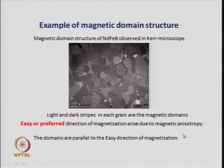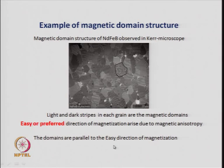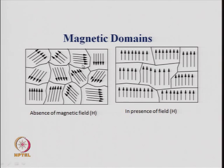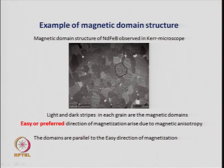Magnetic anisotropy tells you that there are directions in which magnetization can be easily aligned and directions in which the magnetic vectors will not be aligned easily. The domains are parallel to the easy direction of magnetization. Kerr microscopy is very important in understanding magnetic domain structure, confirming that what we draw schematically is actually happening in the real solid, and is a very good technique to understand magnetic domain wall movement.